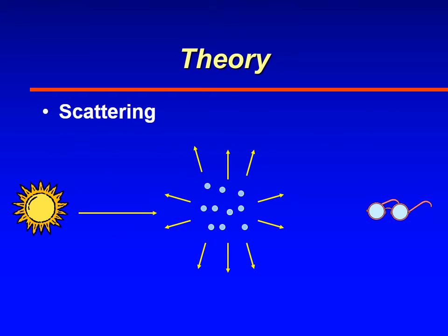Scattering happens whenever light waves strike any objects in the atmosphere, whether they be molecules of air, water droplets, snowflakes, or dust particles. There are three things that can happen to scattered light.